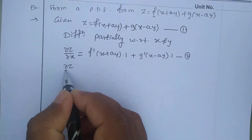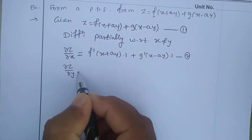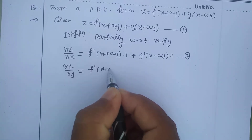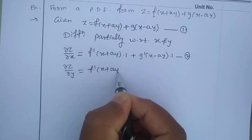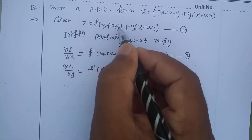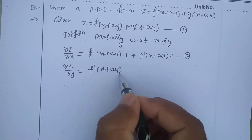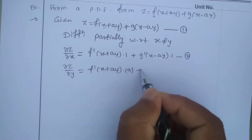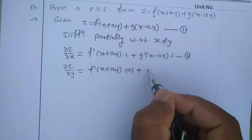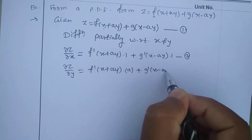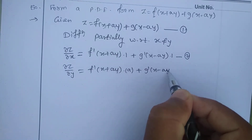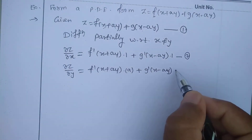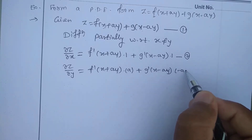Again differentiating equation one with respect to y: ∂z/∂y equals f'(x + ay) times the derivative of (x + ay) with respect to y, which is a, plus g'(x - ay) times the derivative of (x - ay) with respect to y, which is -a. This is equation number three.